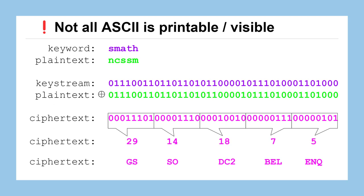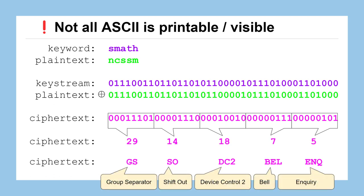Values between 0 and 32 controlled old teletype printers and don't produce visible characters on screen. These five are GS (group separator), SO (shift out), DC2 (device control 2), BEL — which would ring a bell to call the operator's attention — and ENQ (inquiry). The point is we wouldn't actually be able to see these on a printout.